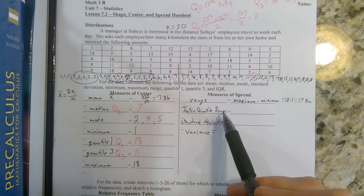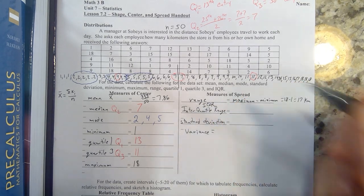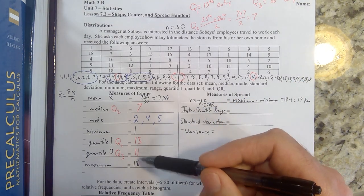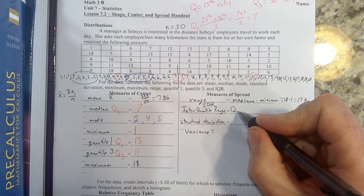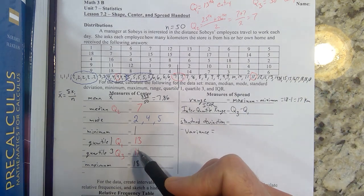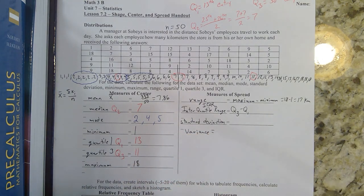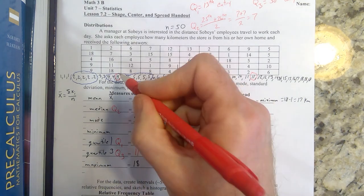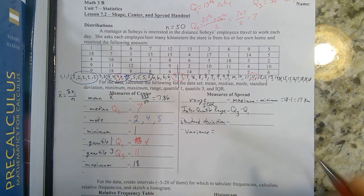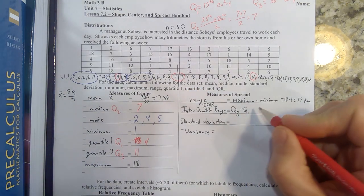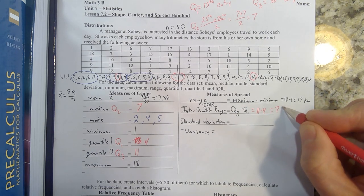Next we have the interquartile range, abbreviated IQR. It's just like it sounds, the distance between our greatest and smallest quartiles. So in this case, we subtract. I'm going to do quartile 3 minus quartile 1, which is going to give me 11 minus 4, or 7 kilometers.